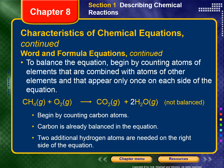To balance an equation, begin by counting atoms of elements that appear only once on each side of the equation. For example, let's balance the methane reaction with oxygen. Start by counting carbon atoms: there's one carbon on each side, so carbon is already balanced. Now count hydrogen: we have four hydrogens on the reactant side but only two on the product side, so we insert a coefficient of 2 in front of H₂O.